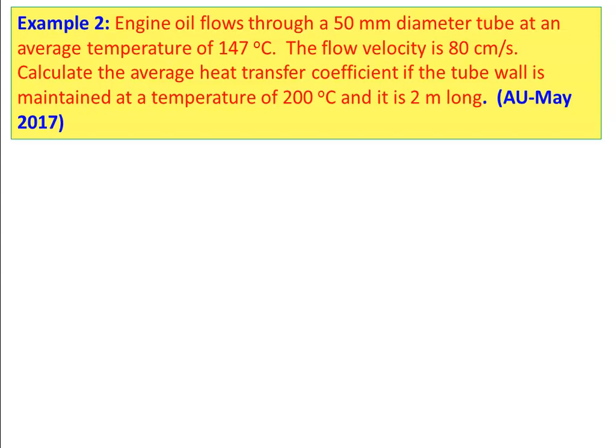Example 2 (from university question paper): Engine oil flows through a 50 mm diameter tube at an average temperature of 147°C. The flow velocity is 80 cm/s. Calculate the average heat transfer coefficient if the tube wall is maintained at 200°C and the tube is 2 m long.